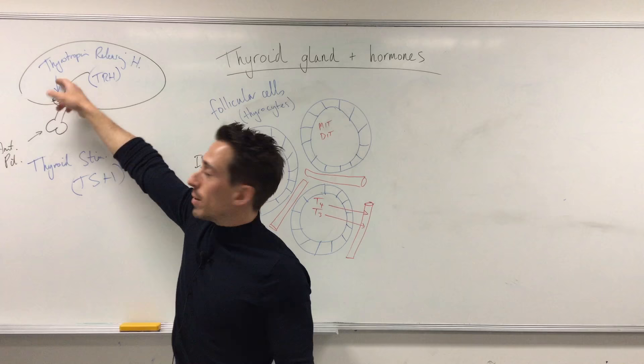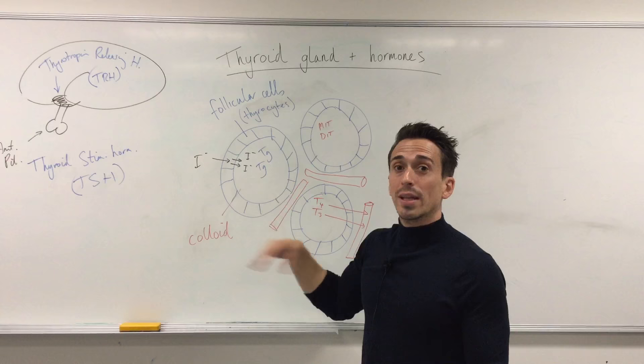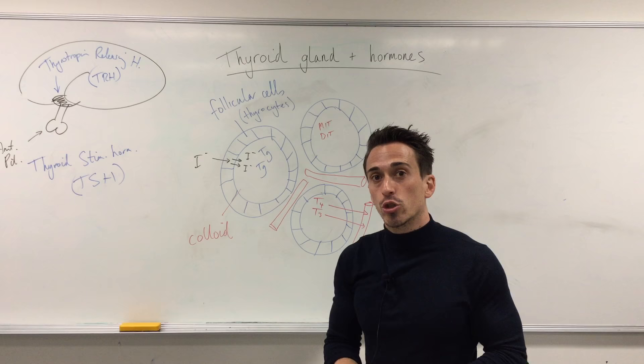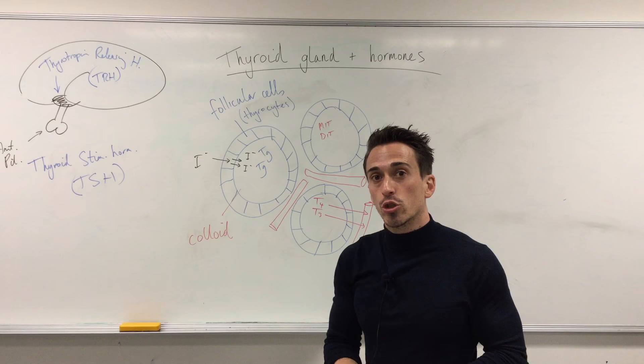TSH travels to the thyroid gland and controls every level of the production process — it stimulates iodine concentration in the colloid, the binding of iodine with thyroglobulin, and T4 and T3 production and release into the bloodstream. The thyroid hormone T4 and T3 then travel around the body to control growth, development, and metabolism.